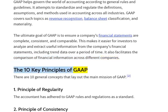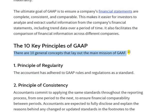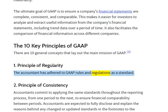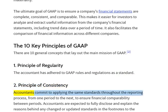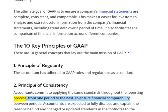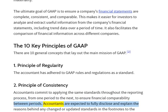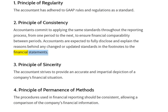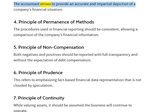The 10 Key Principles of GAAP. There are 10 general concepts that lay out the main mission of GAAP. 1. Principle of Regularity: the accountant has adhered to GAAP rules and regulations as a standard. 2. Principle of Consistency: accountants commit to applying the same standards throughout the reporting process, from one period to the next, to ensure financial comparability between periods. Accountants are expected to fully disclose and explain the reasons behind any changed or updated standards in the footnotes to the financial statements. 3. Principle of Sincerity: the accountant strives to provide an accurate and impartial depiction of a company's financial situation.